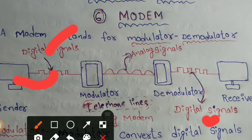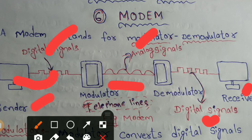We have analog signals between the sender and receiver transmitted over telephone lines. Data and information are passed through telephone lines as analog signals. The modem converts digital signals to analog signals for transmission.